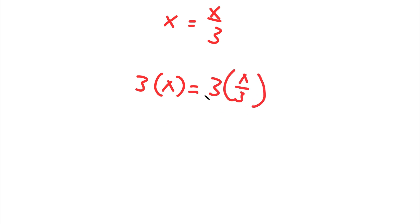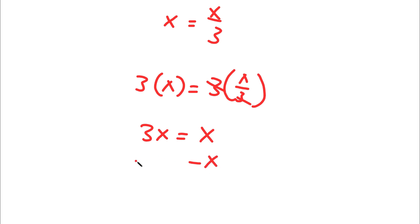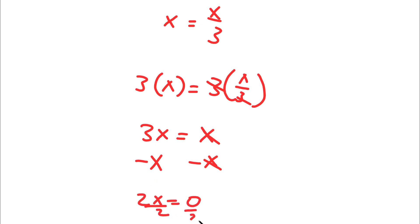So now I have 3 times x is equal to 3 times x over 3. 3 times x is simply 3x. And 3 times x over 3, the 3 simply cancels out, so I'm left with x. Now I'm going to subtract x on both sides — x and negative x cancel out, and 3x minus x is 2x. So I have 2x equals 0, and dividing both sides by 2, I get x equals 0.